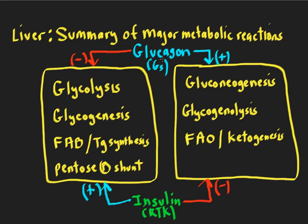When you're fasting, you're also going to have low insulin, which helps play into that. When you're in the well-fed state, everything's just reversed — you have lots of insulin around, turning on all the reactions on the left and helping turn off all the reactions on the right. This is just a review of where all these reactions fit in terms of the liver.